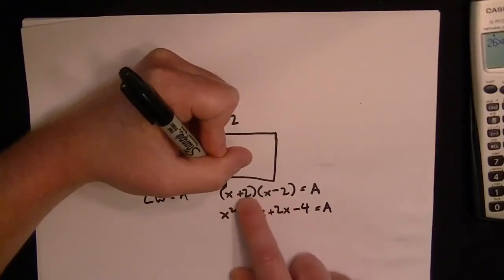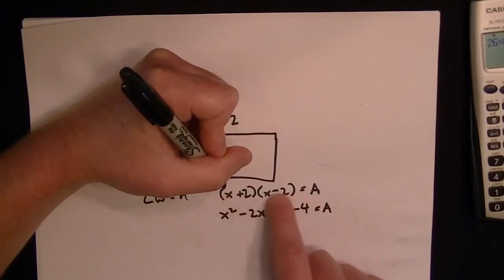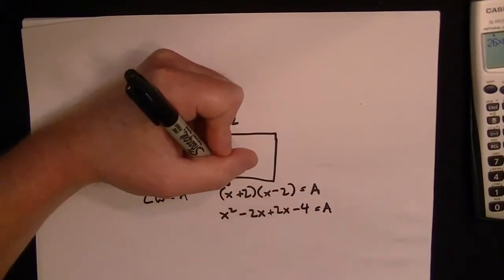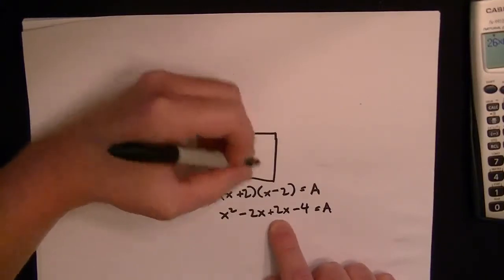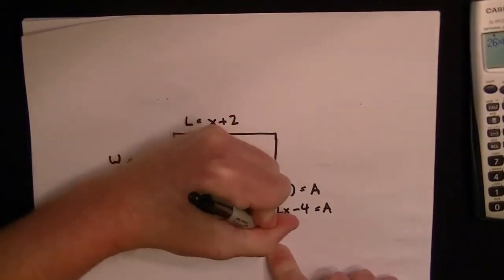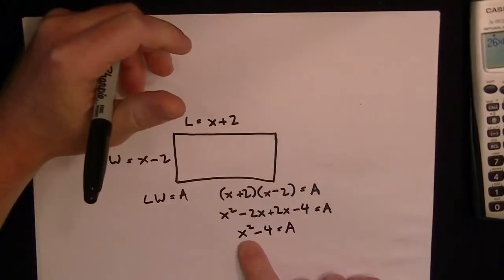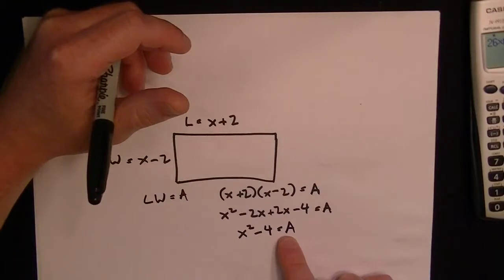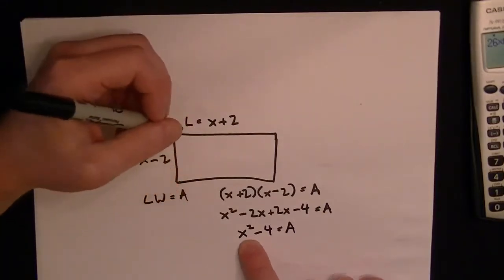You multiply each term by both terms in the other expression. When you work this out, minus 2x plus 2x equals zero, so that disappears. The answer for the area is equal to x squared minus 4.